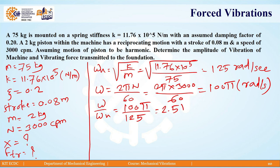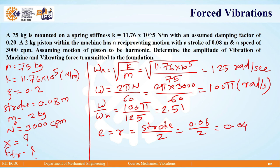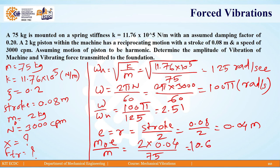The mass of the piston m₀ is 2 kg. To get the eccentricity E, equal to the crank radius, we divide the stroke length by 2: 0.08 divided by 2 equals 0.04 meter. From this we calculate m₀E upon m: 2 × 0.04 divided by 75, giving 10.67 × 10⁻⁴ meters.